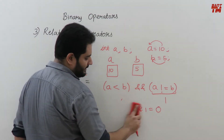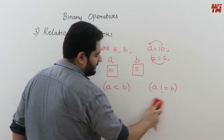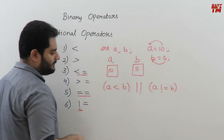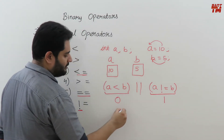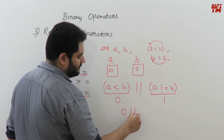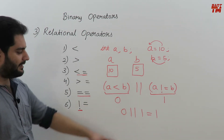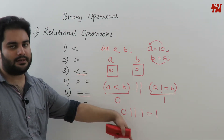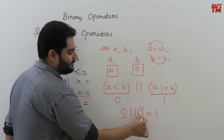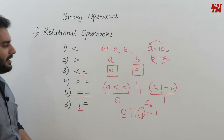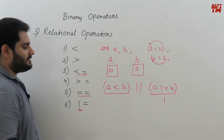Using OR instead: (a < b) || (a != b) gives 0 OR 1, which results in 1 — true. Because OR returns true when even one value is true, and here a != b is true, the overall result is true. Also, the expression a == 10 && b == 5: since 10 is stored in a and 5 is stored in b, both conditions are true, so true AND true returns true.